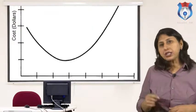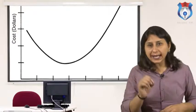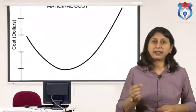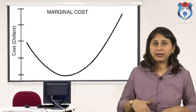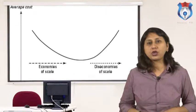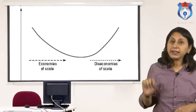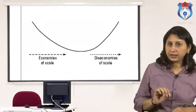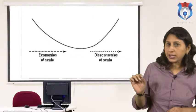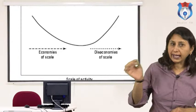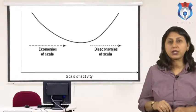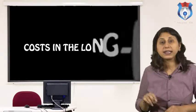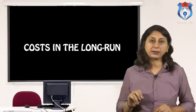Marginal cost is less than the average cost when the average cost is falling. When the average cost is rising, the marginal cost is more than the average cost.